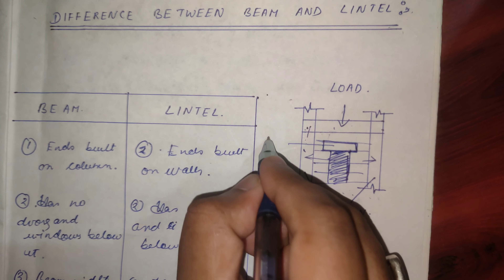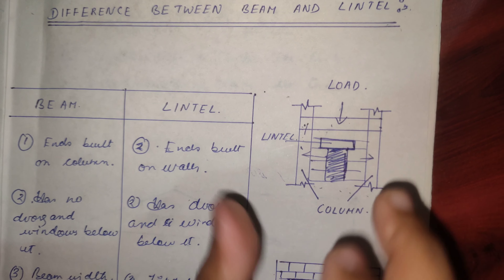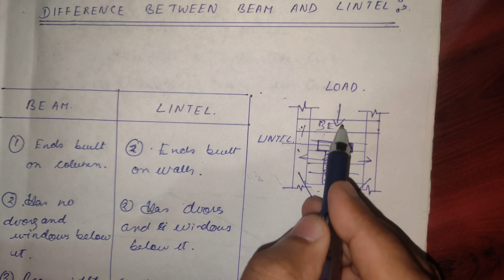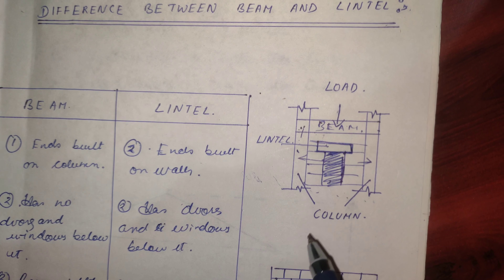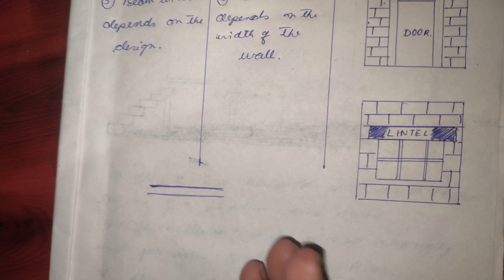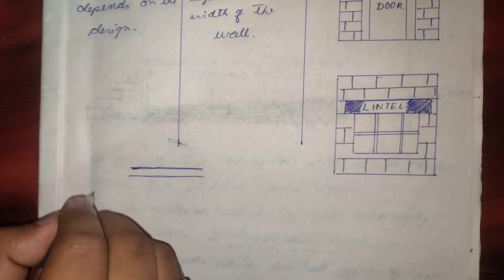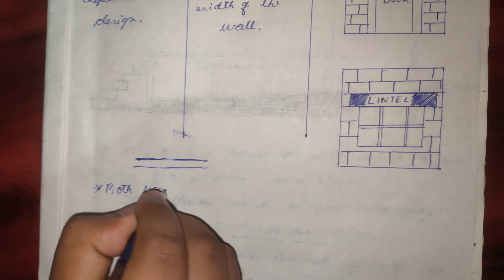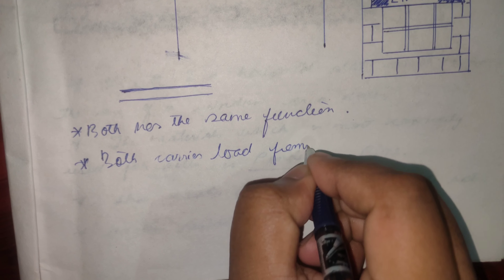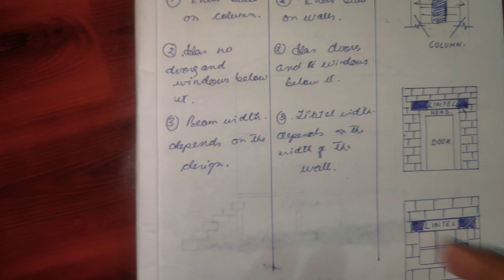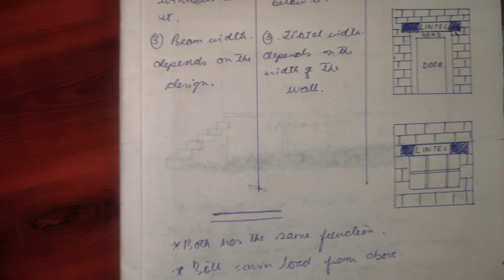Moving on to the third difference: the beam width depends on the design, whereas the width of the lintel must be the same as that of the wall. So the third difference is beam width depends on the design, and lintel width depends on the width of the wall.